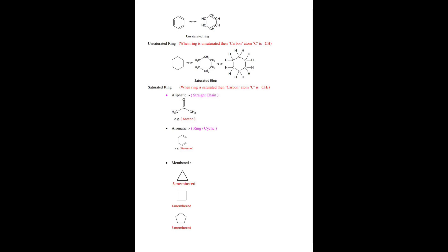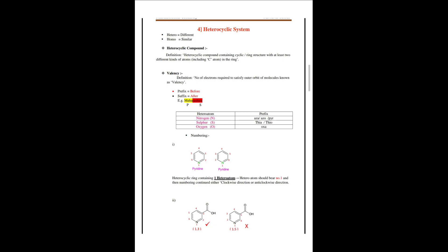The best example of an aromatic compound is benzene, and for aliphatic it is acetone. Regarding membered rings, we have three-membered, four-membered, five-membered, six-membered, seven-membered, and eight-membered rings. Now we move to the main part of our topic — the heterocyclic system. Hetero means different; homo means similar.